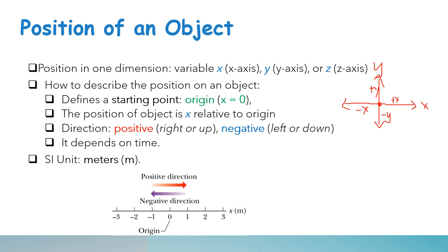Let's take a look at these examples. The first example has motion along the x-axis. Remember that all motion moving to the right is positive and negative if it's going to the left. The green apple is located at positive 2.5 meters because it is to the right of the origin, and the blue particle is located at negative 3 meters.